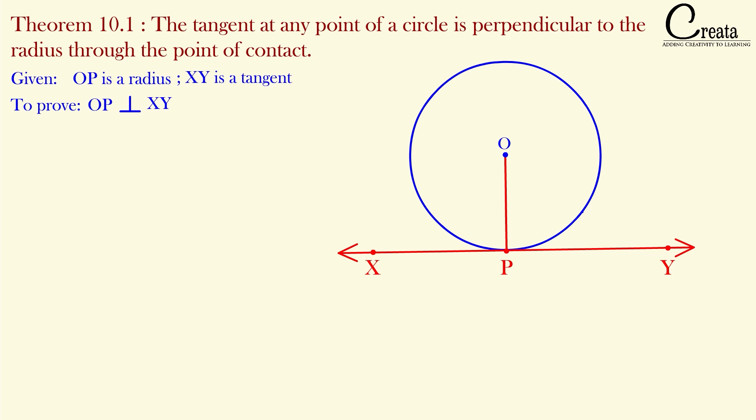Let's take a point Q anywhere on this tangent except point P. Let's join O and Q. We got line segment OQ. Can you tell me, out of OP and OQ, which is smallest? By looking we can say OP is smaller, but we will prove it mathematically.